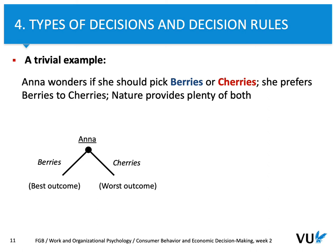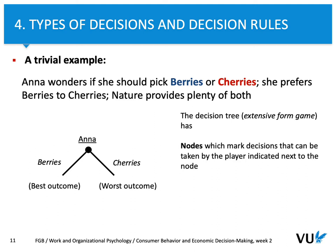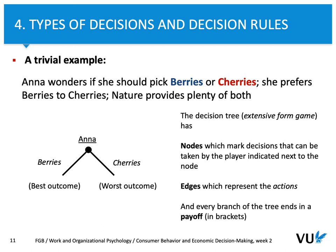In this extensive form game, different from the table, we have nodes. Nodes indicate decisions that can be made or taken by a player. Edges — the lines — represent actions, and each branch ends with a payoff.